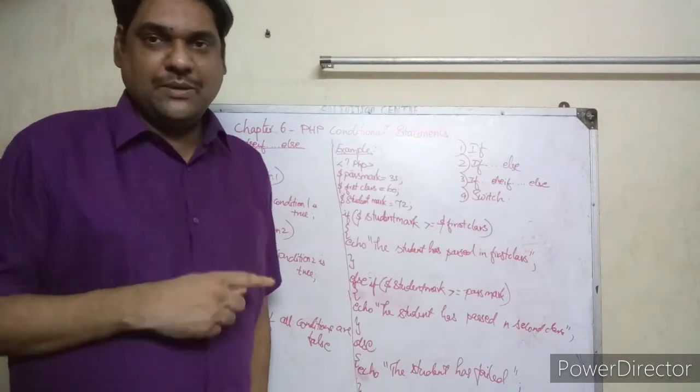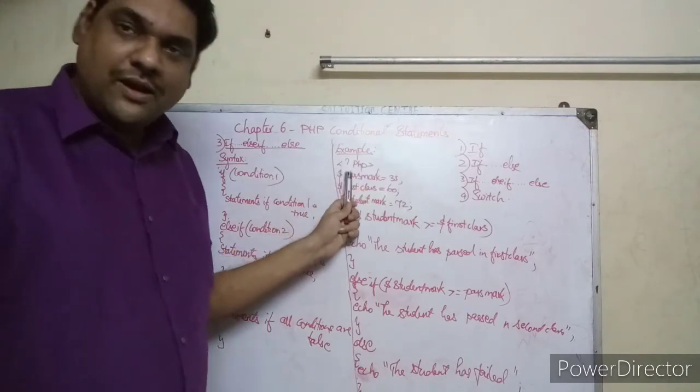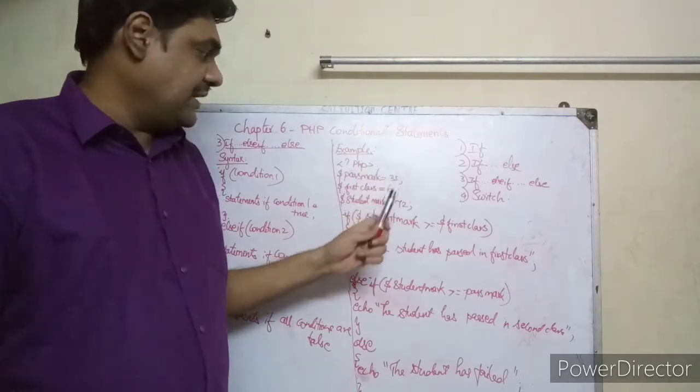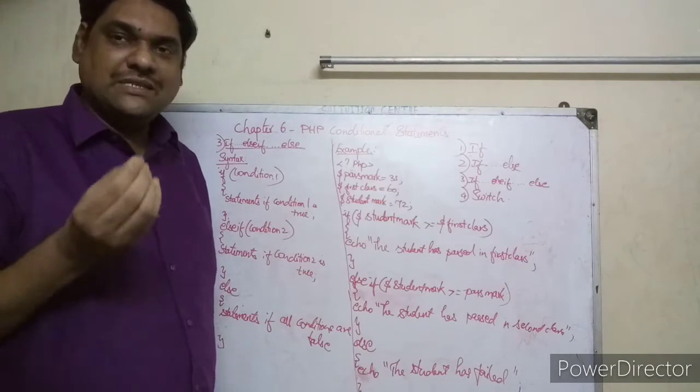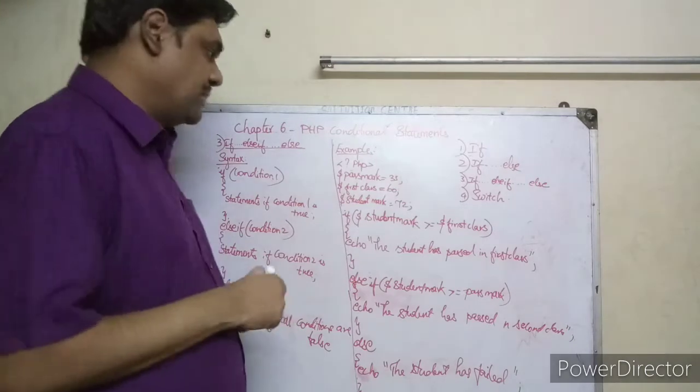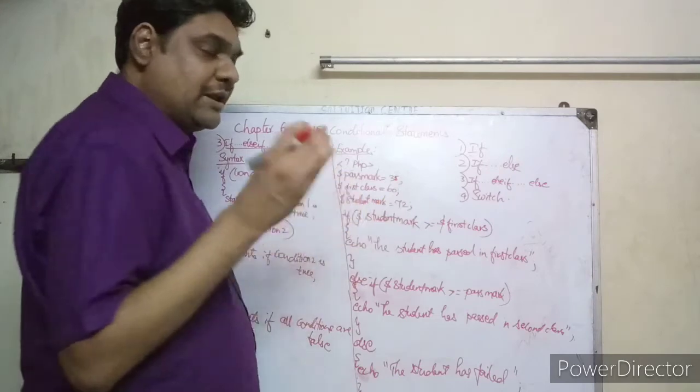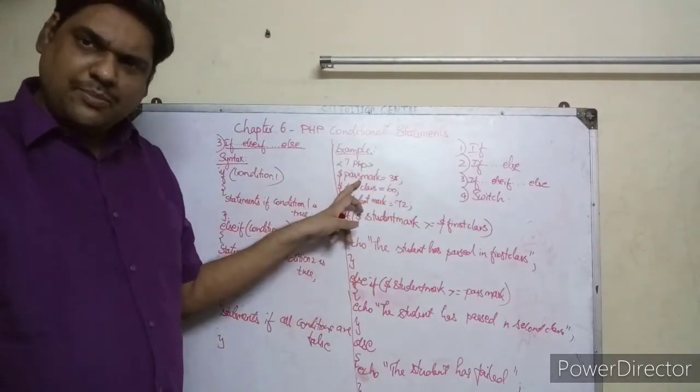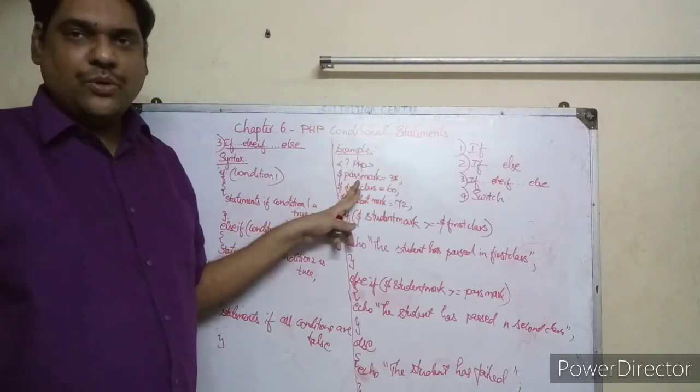So for this example, question mark PHP - this is how you start your PHP code. Dollar pass_mark is equal to 35, you are creating a variable and storing 35 inside it.